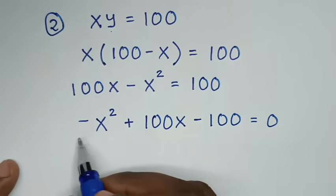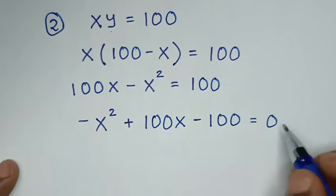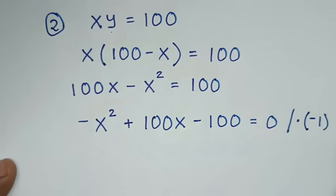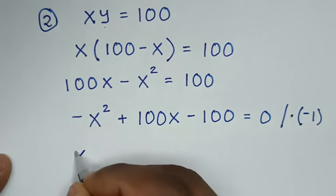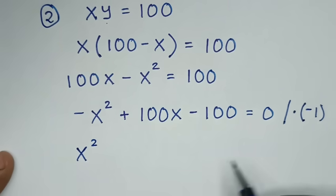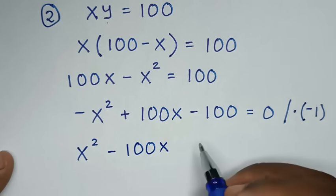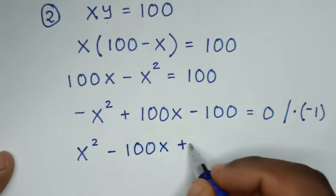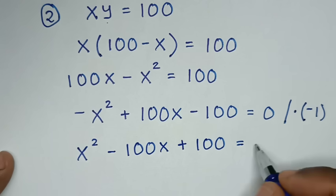From this equation, we have negative x squared plus 100x minus 100 equals 0. We will multiply the whole equation by negative 1, so it will be positive x squared minus 100x plus 100 is equal to 0.